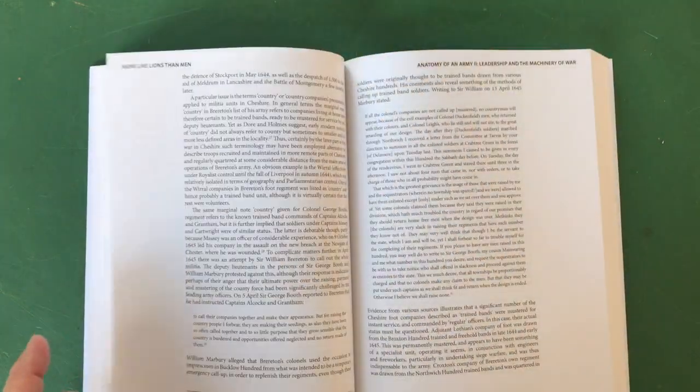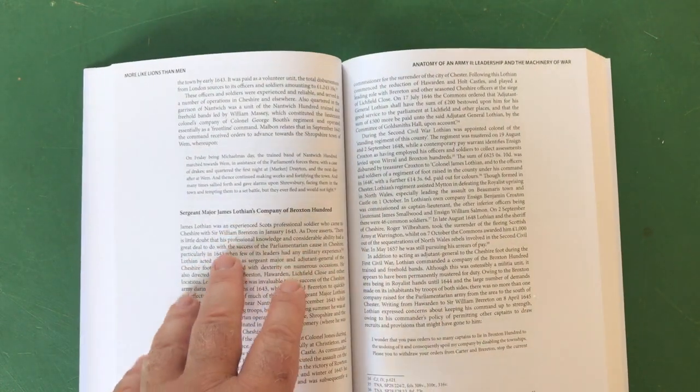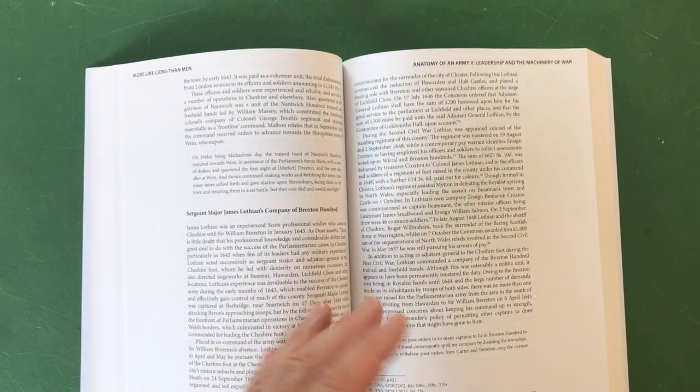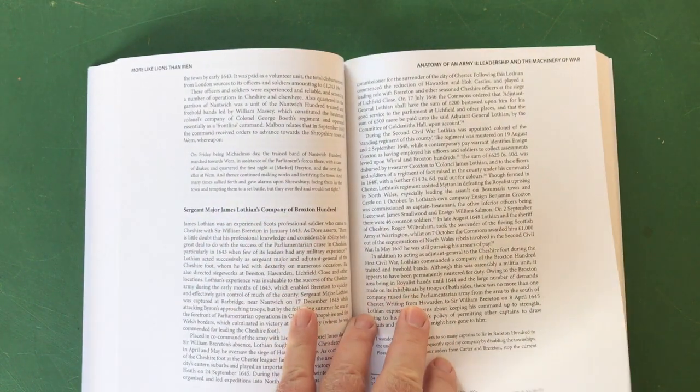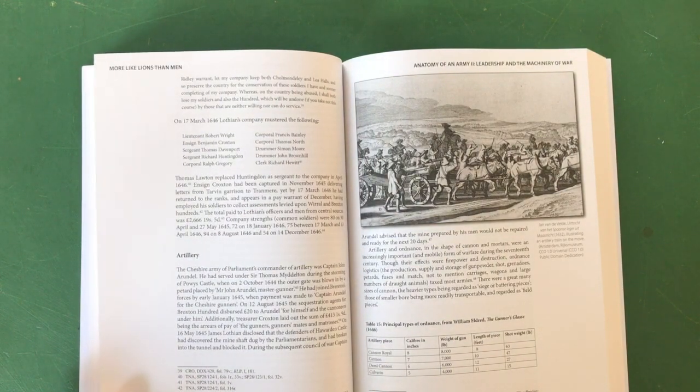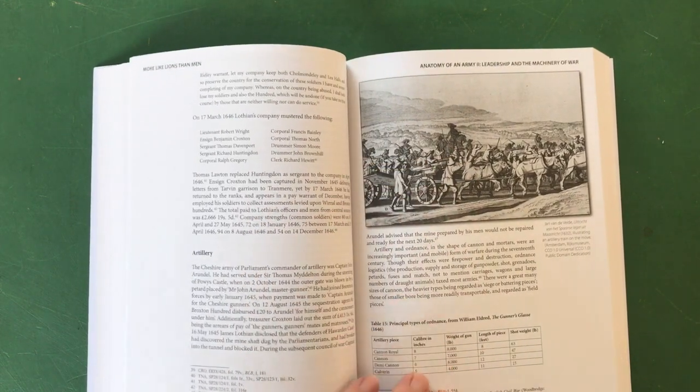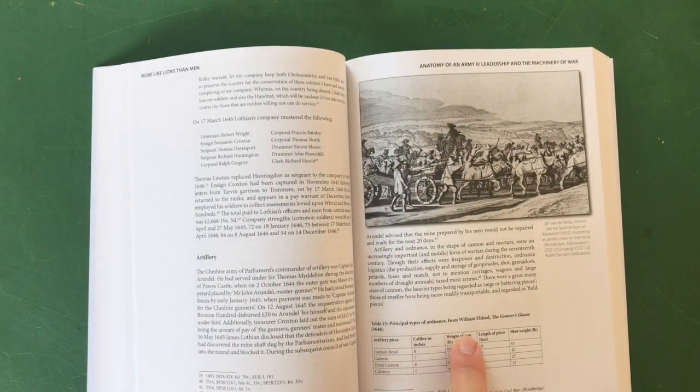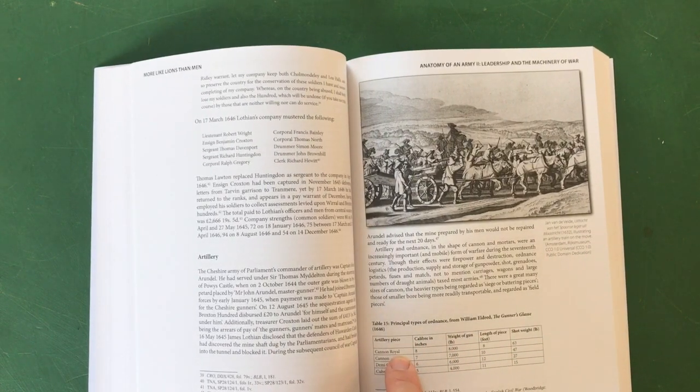A nice musketry discipline image. The trained bands and the role that they've played, how they were raised, how they were trained and so on. Lovely - this again, look how wonderfully specific it gets: Sergeant Major James Lothian's company of Broxton Hundred. This is magnificent looking into this kind of detail.